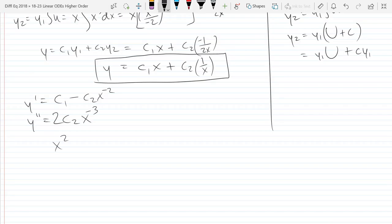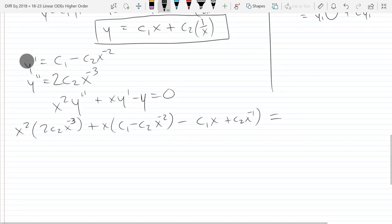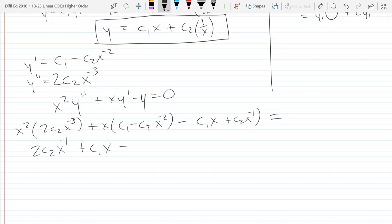I'll rewrite the original ODE, x squared y double prime plus x y prime minus y equals 0. Plug all these in. We get x squared times 2 C2 x to the negative 3, plus x times C1 minus C2 x to the negative 2, minus y, which is C1 x plus C2 x to the negative 1. Hopefully equals 0.